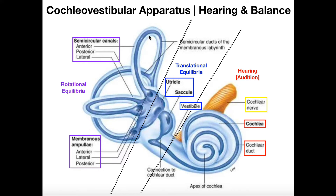The other half of the vestibular apparatus contains the loops — these are the semicircular canals, which is the technical term. There are three semicircular canals: one that kind of goes up is the anterior semicircular canal; one that goes perpendicular to that is the lateral semicircular canal; and one that goes in between them is the posterior semicircular canal. The semicircular canals collectively respond to changes in rotational equilibrium.